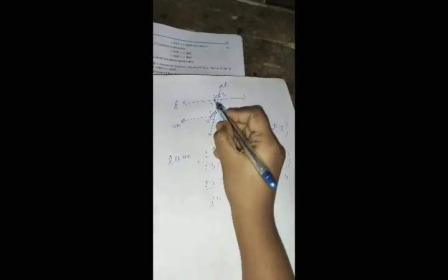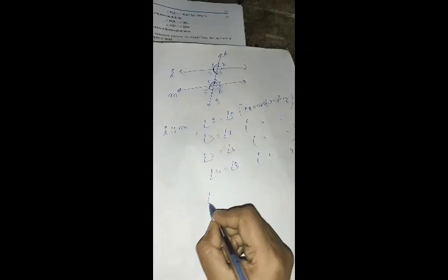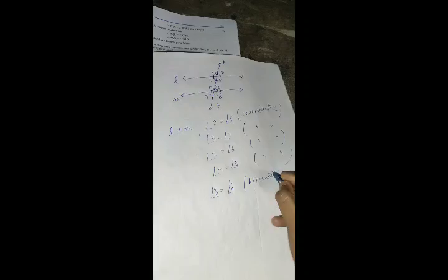Alternate angles are also equal: 3 and 6 are equal. The same applies to all corresponding and alternate angles. For example, 4 and 5 are equal.